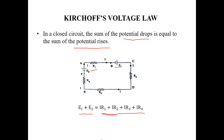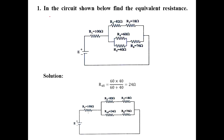Problem: Find the equivalent resistance. First, check R4 and R5 — both ends are connected at the same two points, so they are in parallel. Using R_eq equals R1 times R2 divided by R1 plus R2: 60 times 40 divided by 60 plus 40 equals 24 ohms.